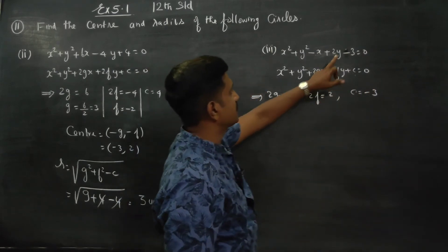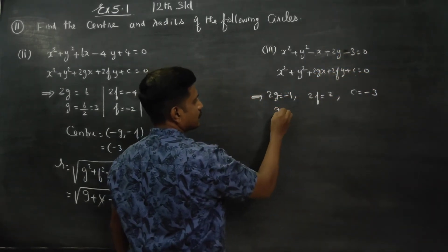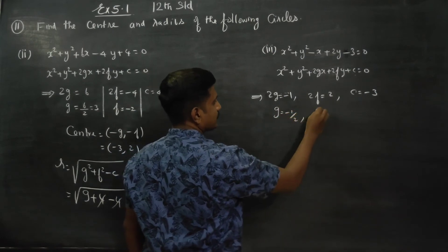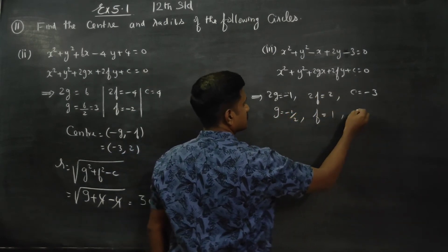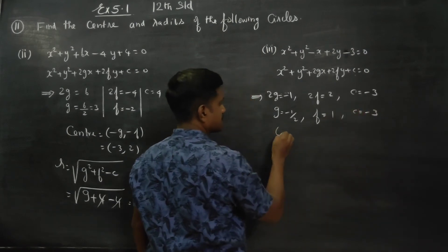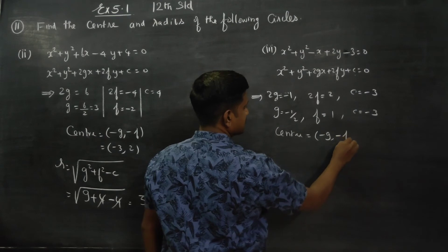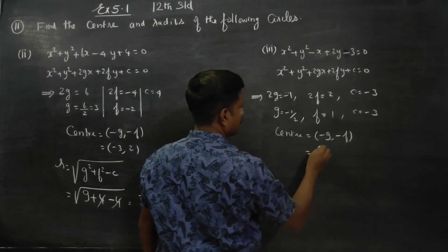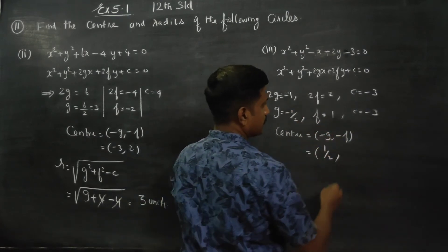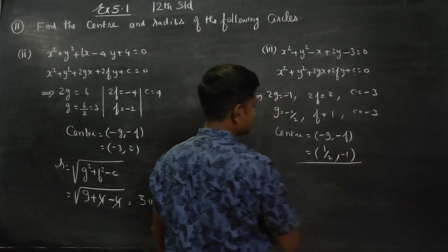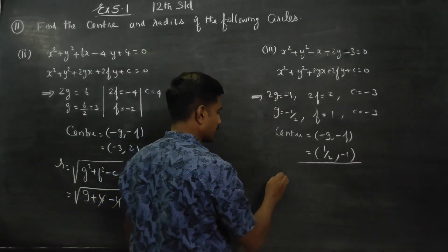From the comparison, g is equal to minus 1 by 2, f is equal to 2 by 2 which is 1, and c is equal to minus 3. The center formula is (−g, −f). Therefore, minus g gives positive 1 by 2, and minus f gives minus 1. So the center is (1/2, −1).